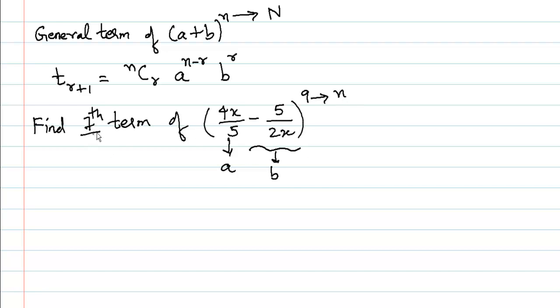Now since we need to find the 7th term, t is 7, but the formula is t_{r+1}. So this 7 is r+1, which means r = 6. In this particular sum we will take the value of r as 6, because the (r+1)th term will be 6+1, which is 7.